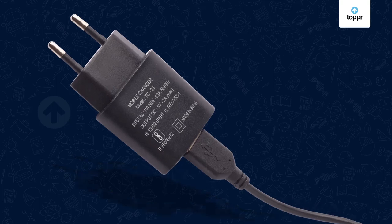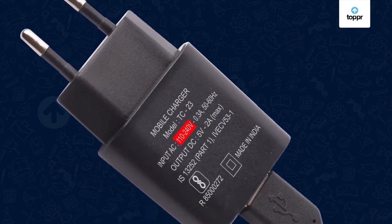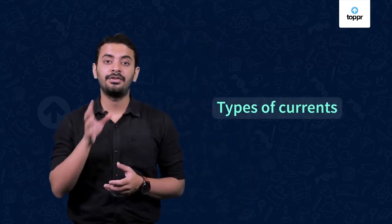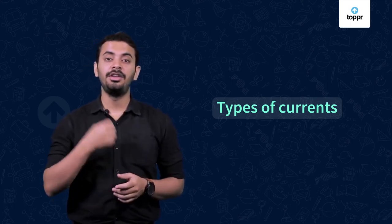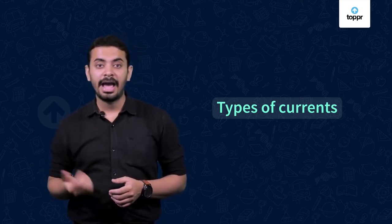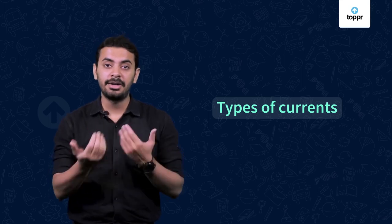Most of you have seen values like 220V AC input on electrical device panels, and at the same time you have seen 5V DC output too, in the case of mobile chargers. But do you know what these numbers refer to? In this session we will look into the different types of currents, the type of current which is typically used to power up the house, and how electrical devices are connected to each other.